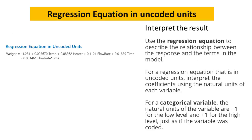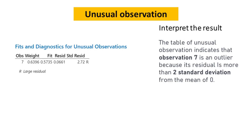Use the regression equation to describe the relationship between the response and the terms in the model. For a regression equation in uncoded units, interpret the coefficients using the natural units of each variable. For a categorical variable, the natural units are minus 1 for the low level and plus 1 for the high level, just as if the variable was coded. The table of unusual observations indicates that observation 7 is an outlier because its residual is more than 2 standard deviations from the mean of 0.